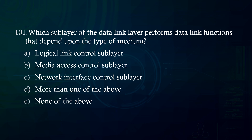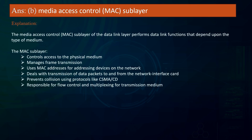Which sublayer of the data link layer performs data link functions that depend upon the type of medium? A. Logical link control sublayer. B. Media access control sublayer. C. Network interface control sublayer. D. More than one of the above. E. None of the above. Answer: Media Access Control (MAC) sublayer. The MAC sublayer controls access to the physical medium, manages frame transmission, uses MAC addresses, deals with data packets to/from the network interface card, prevents collisions using protocols like CSMA/CD, and is responsible for flow control and multiplexing.